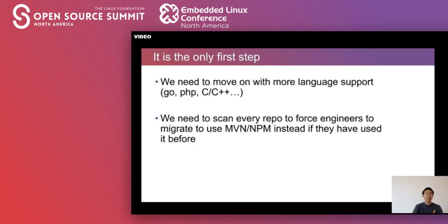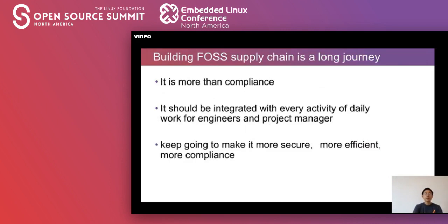It's only the first step. We need to move on with more language support: Go, PHP, C/C++. We need to scan every repository to force engineers to migrate to use Maven and NPM instead, if they haven't used it before. But building an OSS supply chain is a long journey — it's more than complex. It should be integrated with every activity in daily work for engineers and project managers. We will keep going to make it more secure, more efficient, and more compliant.